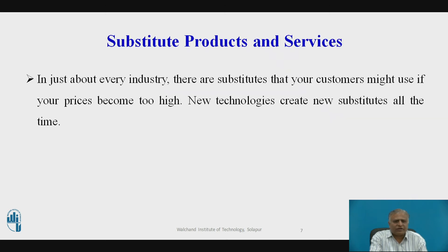Next is substitute products and services. In just about every industry, there are substitutes that customers might use if your prices become too high. New technologies create new substitutes all the time. For example, ethanol can be substituted for gasoline in cars, vegetable oil for diesel fuel in trucks, and wind, solar, coal, and hydropower for industrial electricity generation. Internet and wireless telephone services can substitute for traditional telephone services. An internet music service that allows downloading music tracks to an iPod or smartphone has become a substitute for CD-based music stores. The more substitute products in your industry, the less you can control pricing, lowering your profit margins.